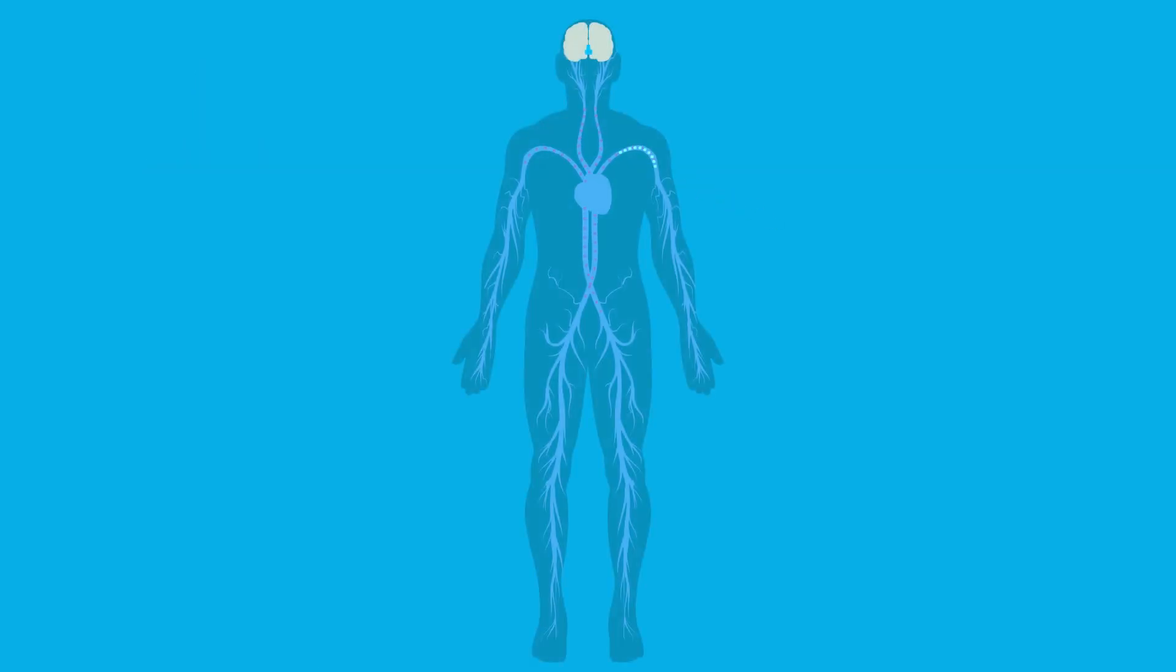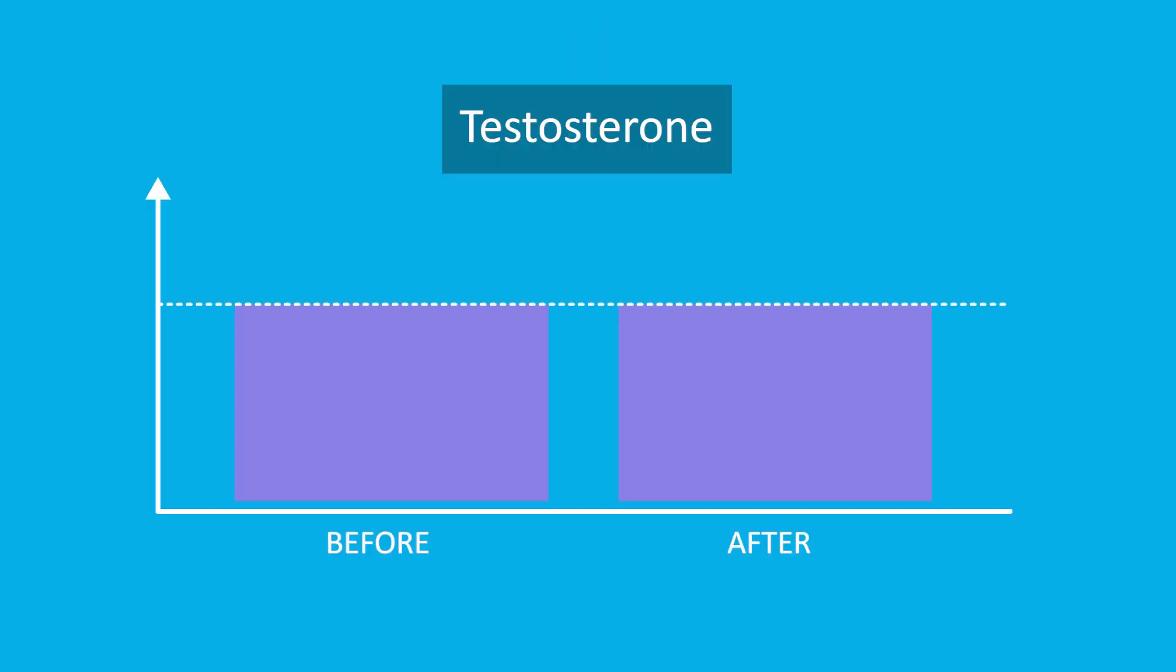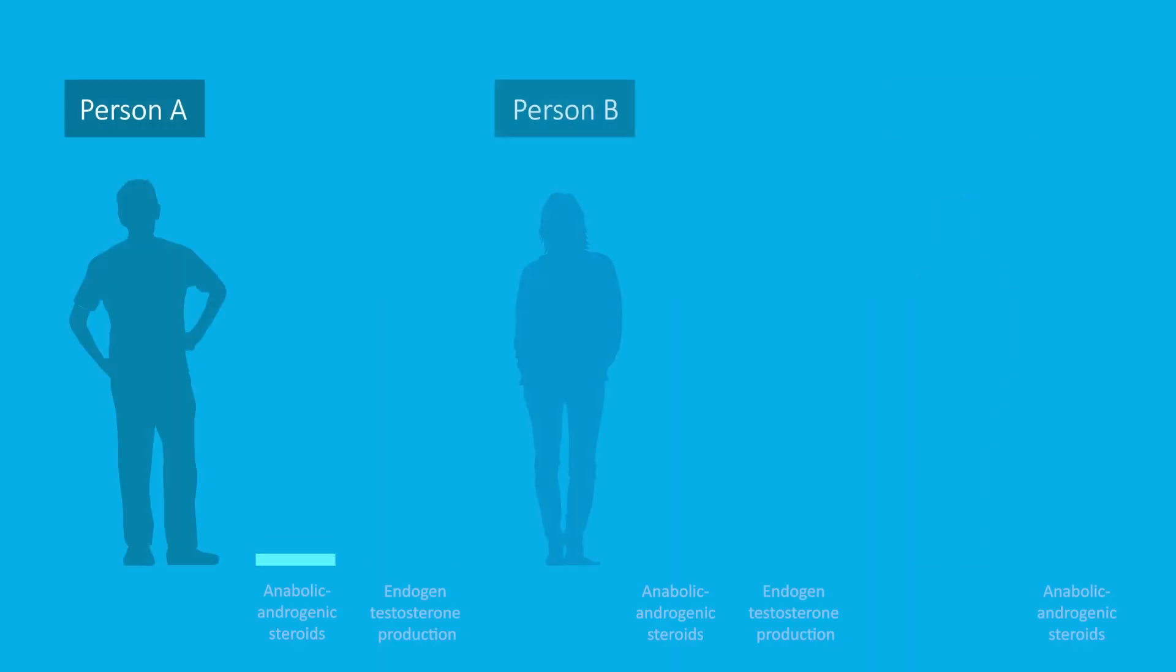For some, the body's own production of natural testosterone can decrease or completely stop while they take steroids. This happens because the body has received enough testosterone from external sources, which has interrupted the stimulation of testosterone production by the pituitary gland. As a consequence, less testosterone is produced naturally than before. How quickly this happens depends on individual differences, as well as on the type and dose of steroid used.